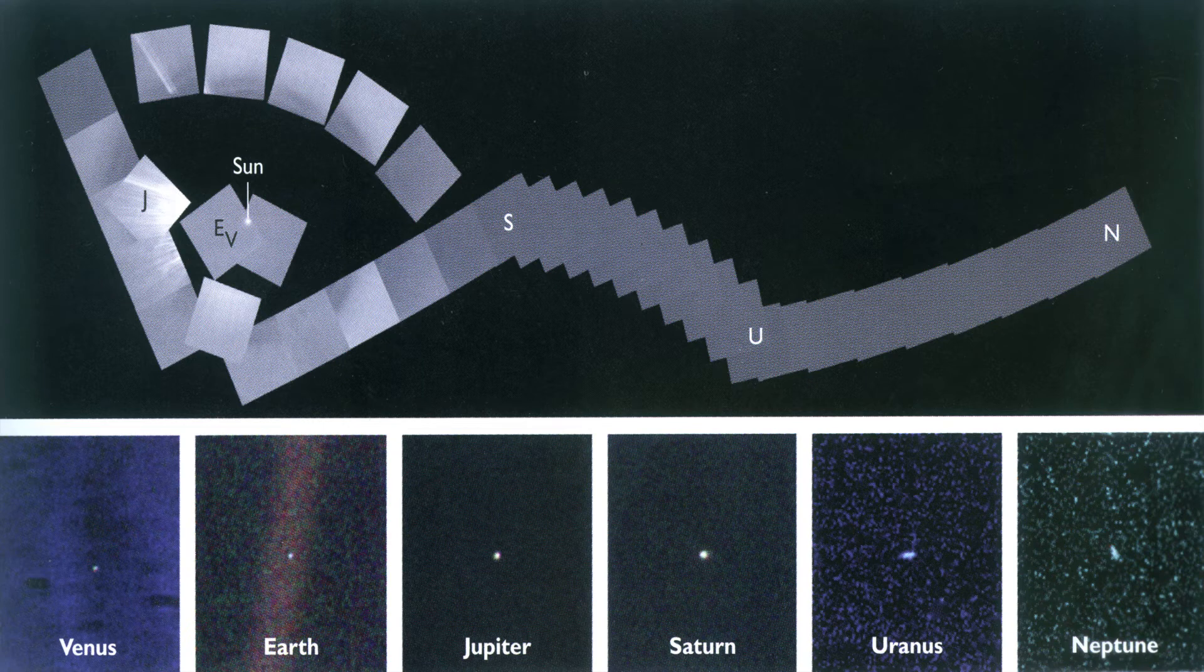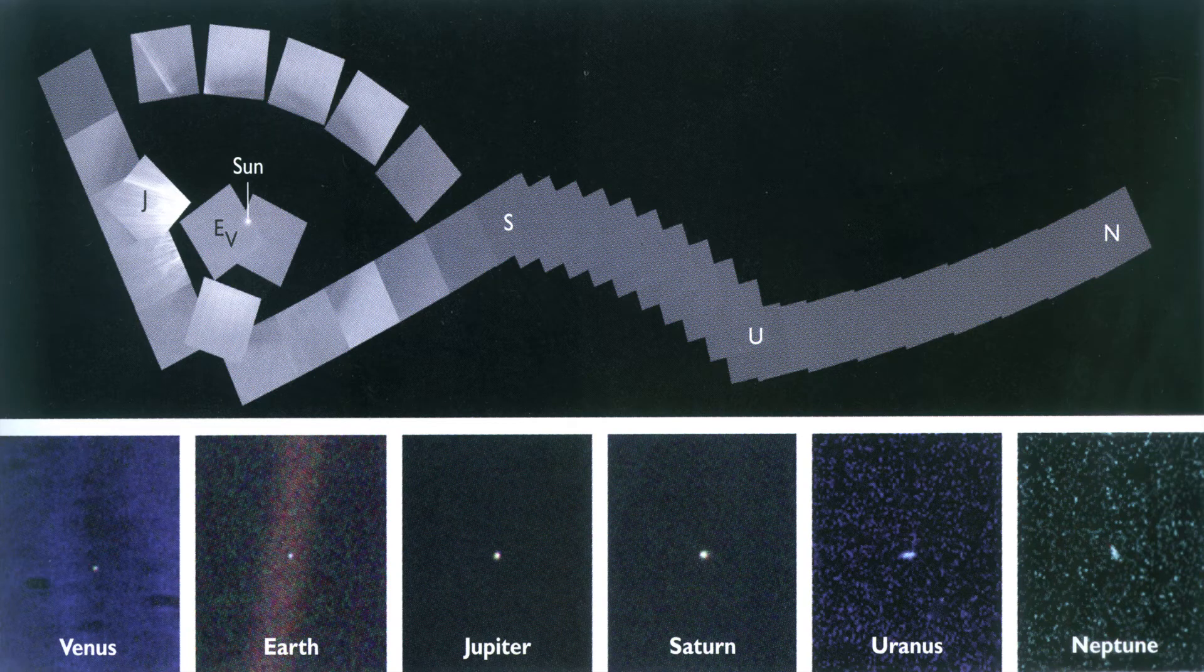The mosaic consists of 60 frames that, once magnified revealed Venus, Earth, Jupiter, Saturn, Uranus and Neptune.